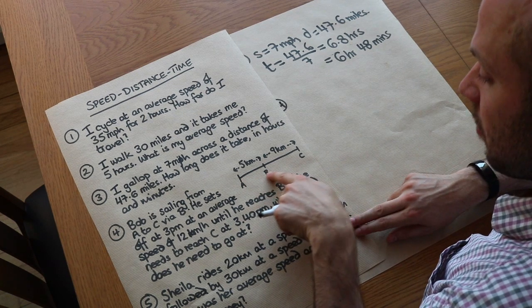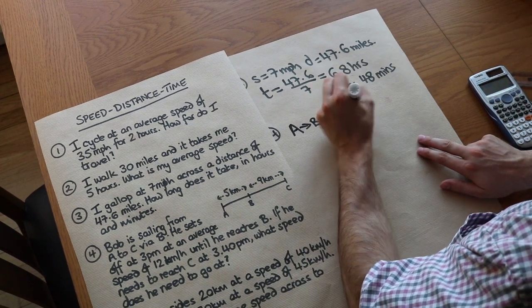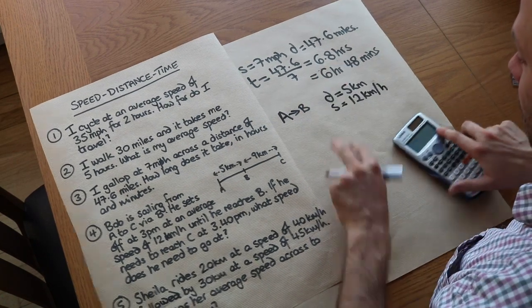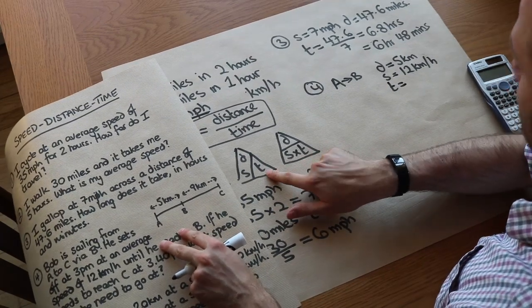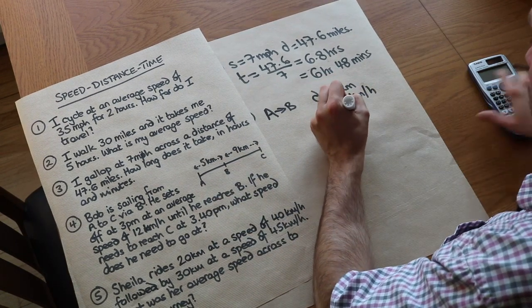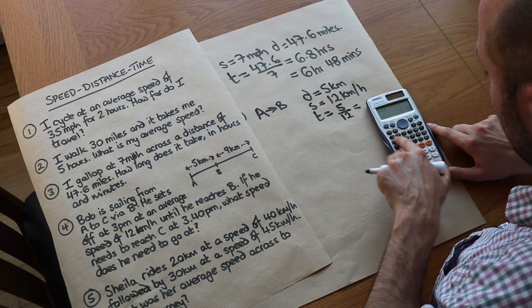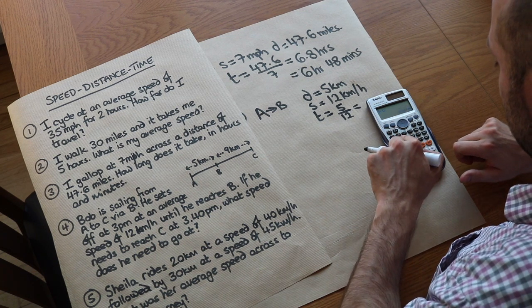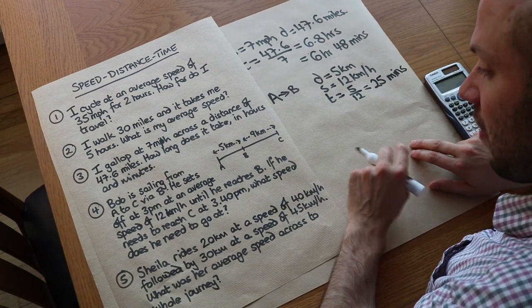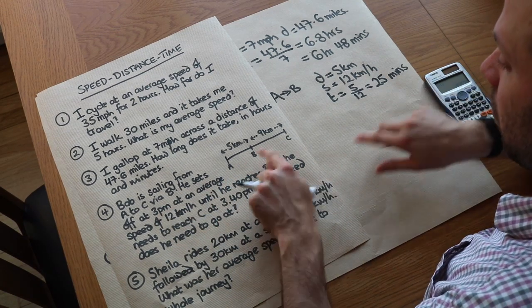We've got the journey from A to B first. We know that the distance is 5 kilometres, and we know the speed is 12 kilometres per hour. Now from that we can work out the time. Time is equal to distance over speed. So we do distance 5 over speed 12. If we do that, 5 twelfths, I could use that key or times it by 60. If I press that special key again, it tells me that's 25 minutes. So we know it takes 25 minutes to get to B. He starts at 3pm, so it's 3:25 when he gets to B.